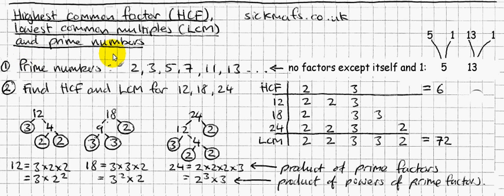I'm going to begin with prime numbers because they help you work out the HCF and LCM, so you need to know about these first. Here are a couple of prime numbers, and what they have in common is they have no factors except themselves and 1. Each of them only have themselves and 1 as their factors.